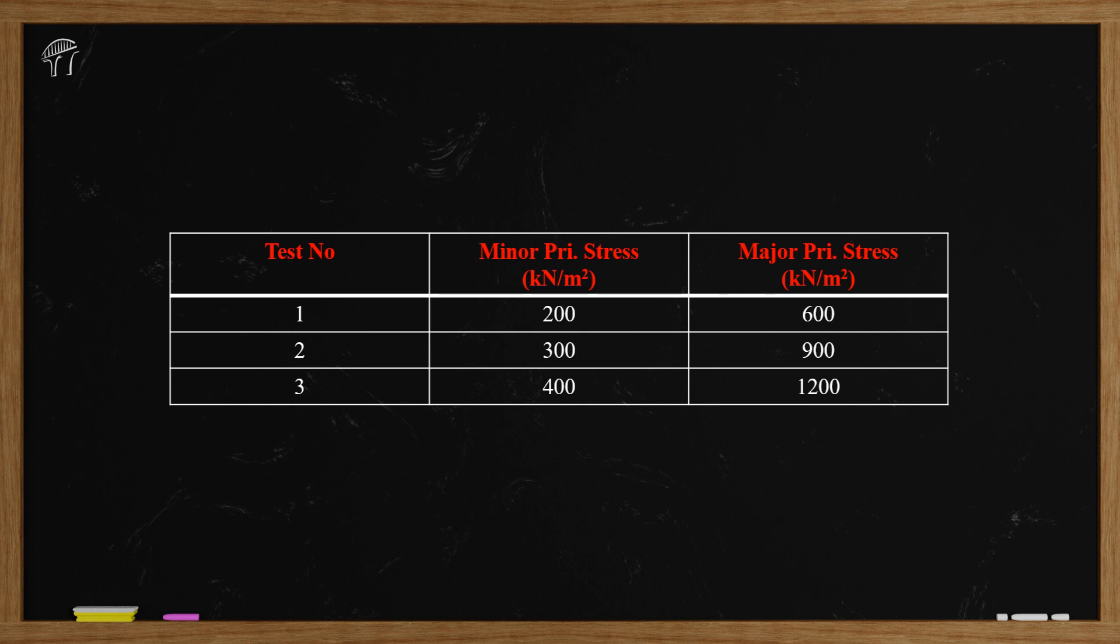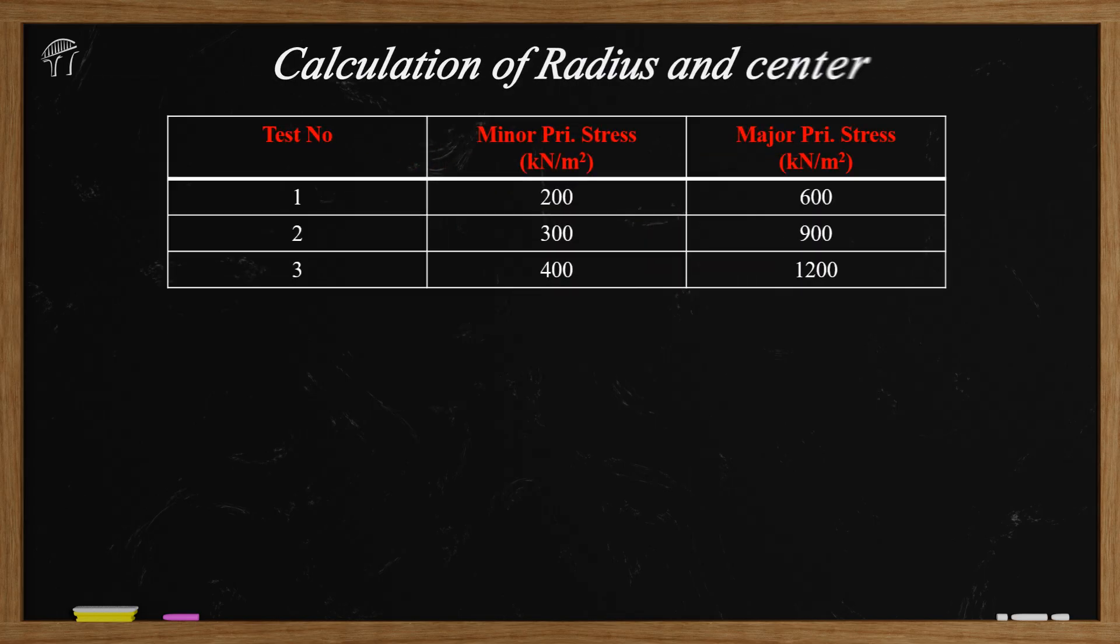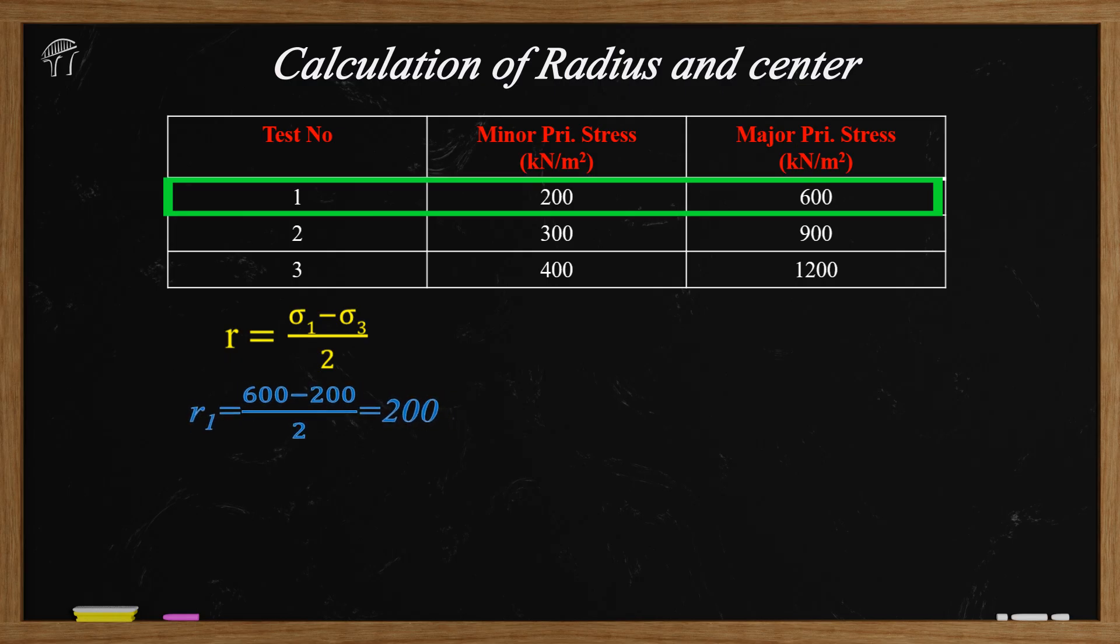Okay, so now we have understood some basic principles about the Mohr circle so we can go ahead and actually calculate the radius and locate the center of each Mohr circle. As we know the formula for radius of a circle r equals sigma 1 minus sigma 3 by 2. So radius of the first circle will be r equals 600 minus 200 by 2 that is 200.